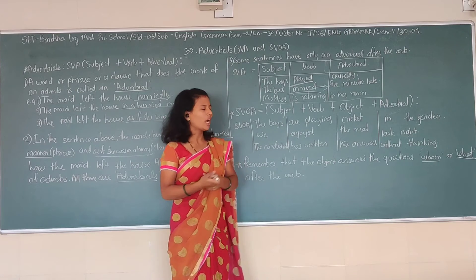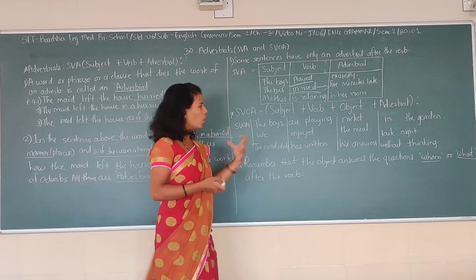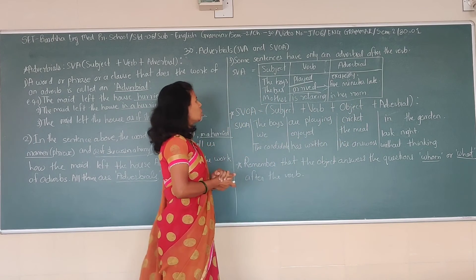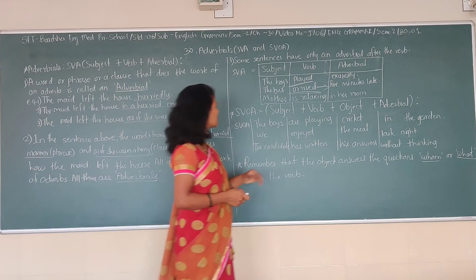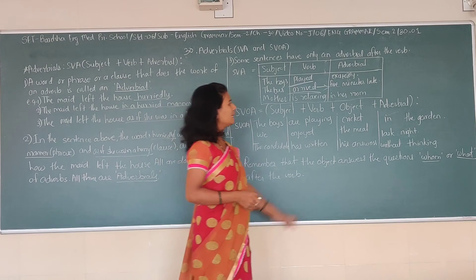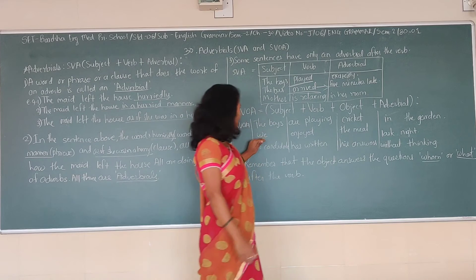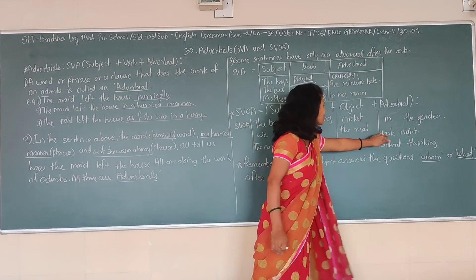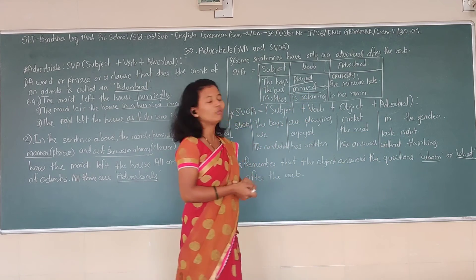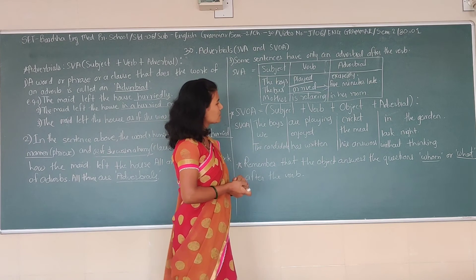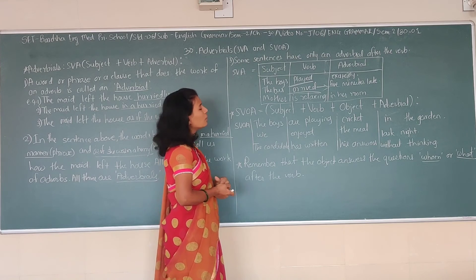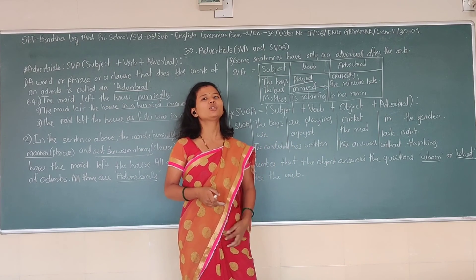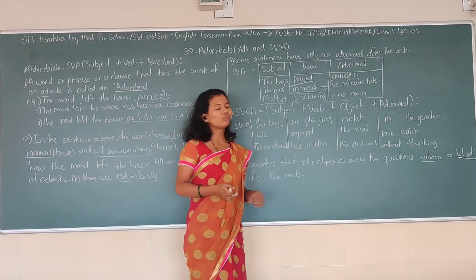How to find out the object? You ask whom or what. If your question starts with whom or what, then your answer will be your object, and the adverbial should come after the object. For example: what are the boys playing in the garden? — cricket. What did we enjoy last night? — the meal. What has the candidate written without thinking? — his answers. So, asking what or whom is the easy way to find the object.